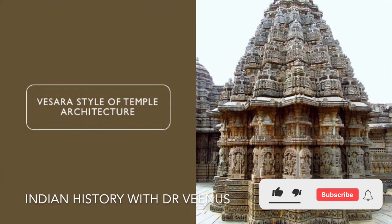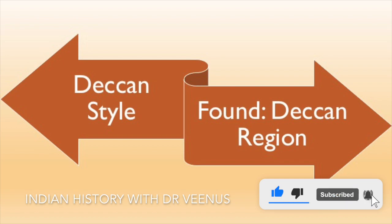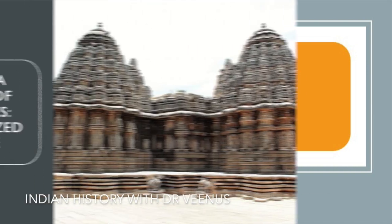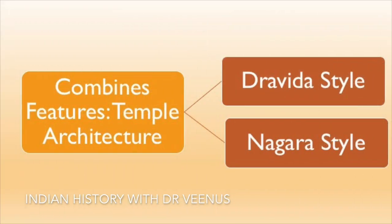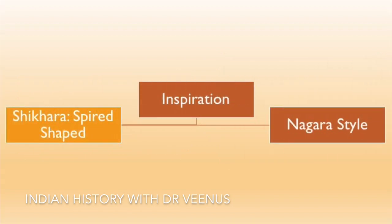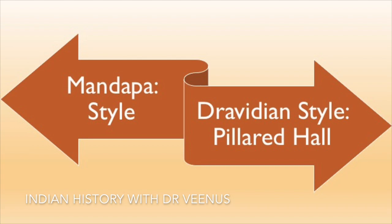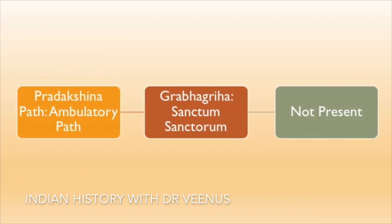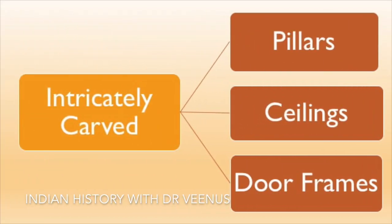The Veser style of temple architecture is also called the Deccan style, as most temples of this style are found in the Deccan region. It is a hybridized style formed by combining features of both the Dravid and Nagar styles. This style has a spire-shaped Shikhar inspired by the Nagar style, while the Mandap is designed in the Dravidian style as a pillared hall. The Shikhar and Mandap are joined by an Antaraal. The Pradakshina Patha, an ambulatory pathway around the Sanctum Sanctorum, is not present. The pillars, ceiling, and door frames are very intricately carved.